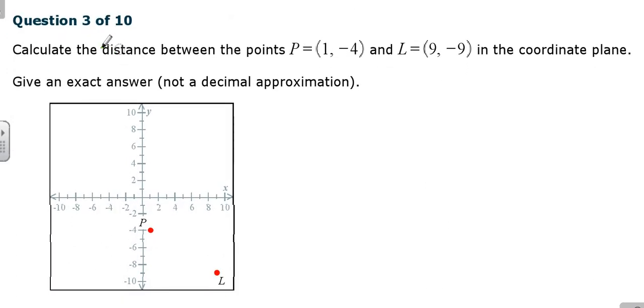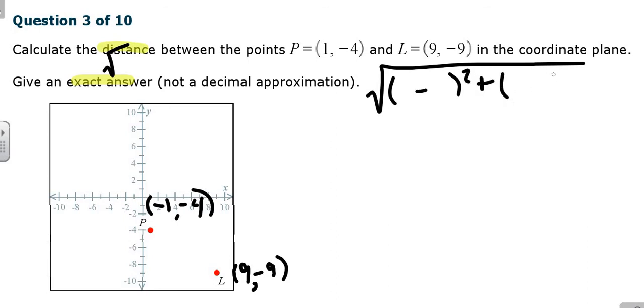Number 3, calculate the distance between the points. P is at negative 1, negative 4. Let's identify that. That's right here, negative 1, negative 4. And L is at 9 and negative 9. Give the exact answer, not a decimal approximation. Exact answer means a simplified radical. Start with the distance equation.